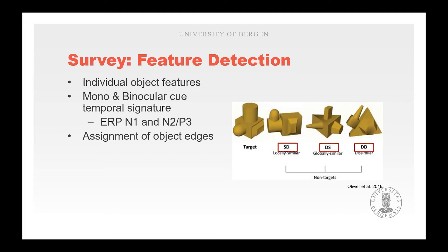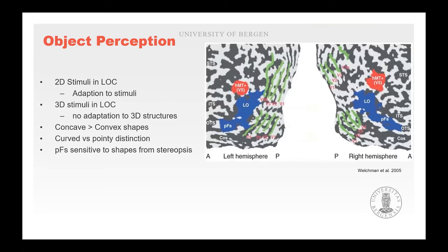Another example of the importance of assignment of object edges is the Rubin vase, which can be seen as either two faces facing each other or a vase in the middle, depending on what's viewed as the background. The lateral occipital complex is specialized in differentiating between 2D and 3D stimuli — it adapts to 2D stimuli but not 3D, receives input from V1, V2, and V3, and is part of the ventral stream. It specifically prefers concave over convex shapes and has specific neuronal populations dealing with curved and pointy features.